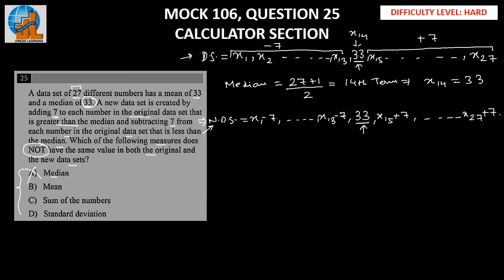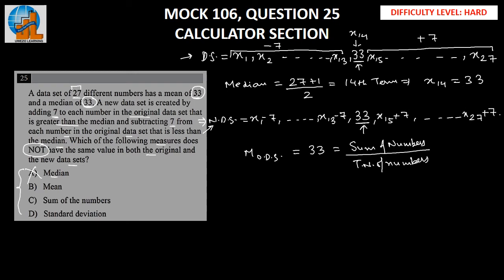Let's go to option B. We know that the mean for the original data set is 33. Mean equals the sum of all numbers divided by the total number of numbers. Taking the sum of numbers as x, we have 27 terms, so 33 equals x divided by 27.